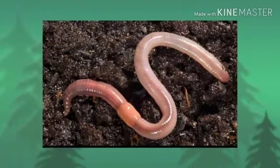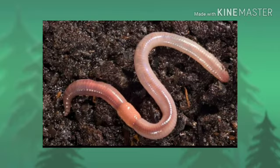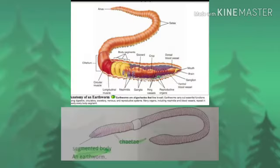Annelids are worms with bodies divided up into rings, also known as segments. Annelids do not have legs, but they do have tiny bristles called chaetae. An example of annelids is the earthworm.